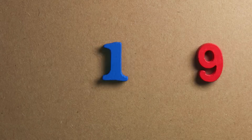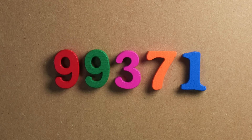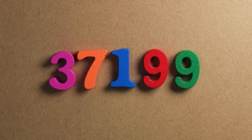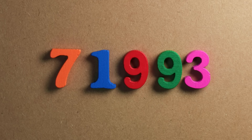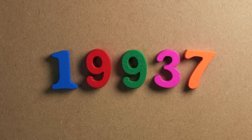But what is a circular prime? 19,937 is a prime number, but so is 99,371. And so is 93,719, where I've rotated the number again. And so is 37,199 — that is a prime number as well. And so is 71,993. All those rotations are all prime numbers. That is a circular prime.